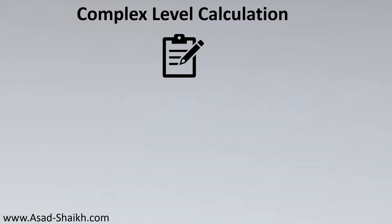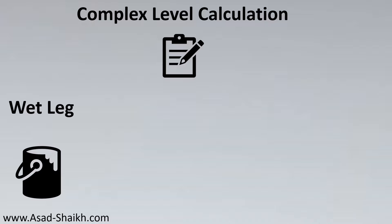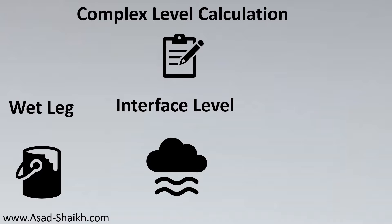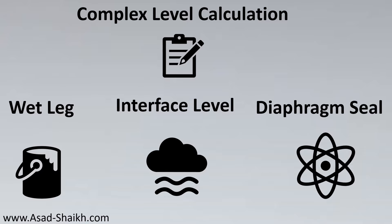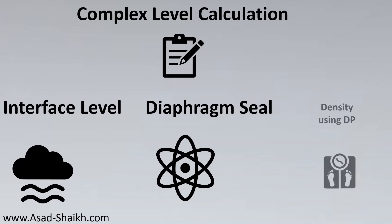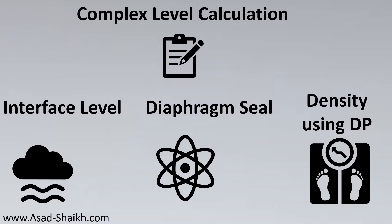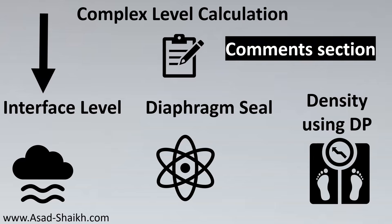There are more complex level calculations beyond this, such as wet leg configuration, interface level measurement (measuring between two liquids like oil and water), and diaphragm seal cases where the fill fluid has a different specific gravity than the tank fluid. It is also possible to measure the density of a substance using differential pressure. Please comment if you'd like videos on these topics.